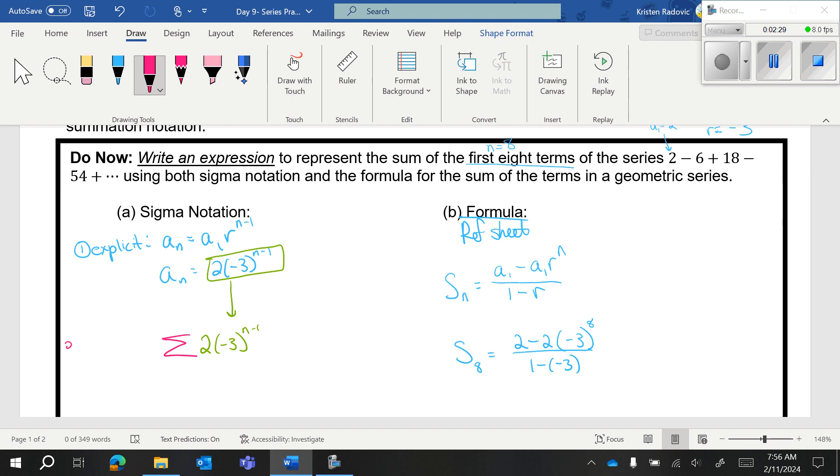We are going to take this formula, write it down here, and then we are going to slap a sigma in front of it. And we are going from N equals 1 to 8.